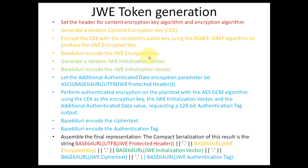The next step is generating an initialization vector. Then we generate the Additional Authentication Data, which is simply the Base64 URL format of the header. For the actual encryption we use the AES-GCM algorithm, which is specified by the ENC tag in the header. Using this algorithm, we use the content encryption key as the encryption key along with the initialization vector to encrypt the actual payload. This produces two things: a ciphertext and an authentication tag, both encoded to Base64 format.